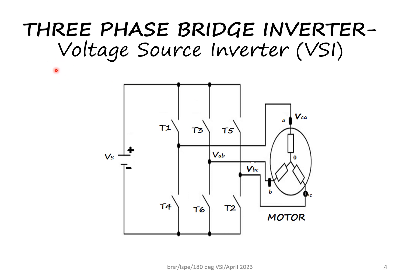The power circuit diagram of the three-phase voltage source inverter is given here. This is an inverter operating in 180-degree mode. The input voltage is DC and the output is three-phase AC — three waveforms shifted from each other by 120 degrees. Usually the AC output is given to an AC motor.